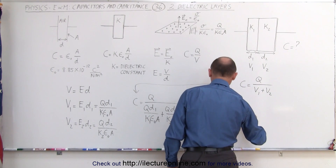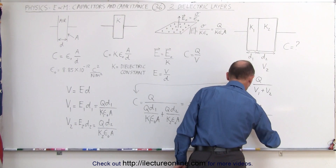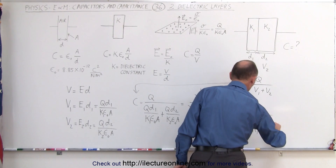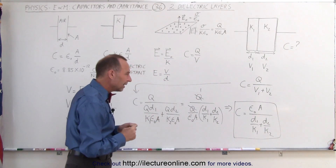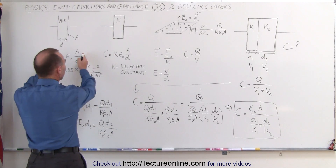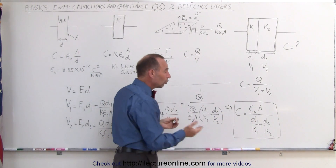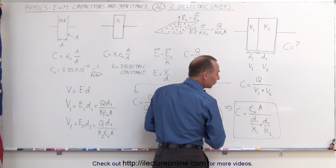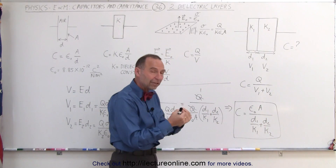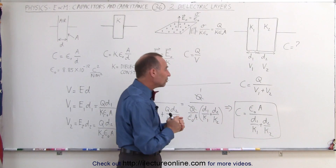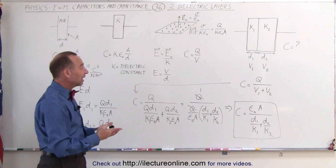And that's how you find the capacitance of a capacitor that has two dielectric layers in it. Comparing this to our original equation, notice that capacitance equals epsilon sub nought times A divided by the distance. Now the distance is weighted depending upon the dielectric constant. We sum up the distances — D total is simply D1 plus D2 — but each distance is weighted by its respective dielectric constant, taken care of by dividing each distance by K1 or K2. And that's how we find the capacitance of a capacitor with two dielectric layers.